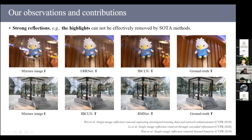We compared reflection removal results with state-of-the-art deep learning-based methods such as ERRNet and IBRNet. These are all state-of-the-art deep learning-based reflection removal algorithms, but we can see the reflections are still remaining in their results. Our proposed network — Location-Aware Single Image Reflection Removal — first trains a network to learn a reflection confidence map, detecting where stronger reflections are, and then removes those strong reflections.